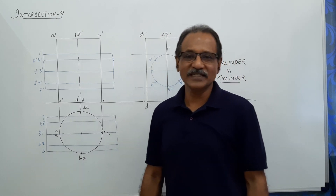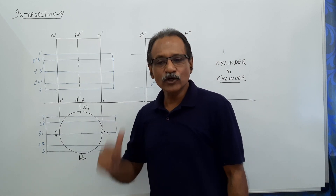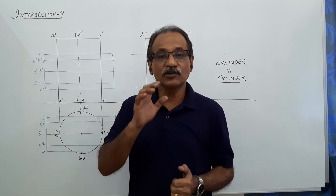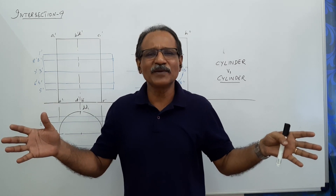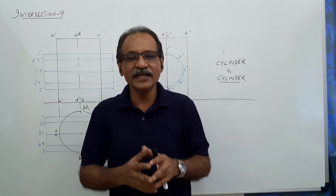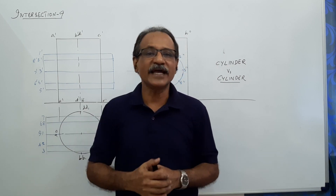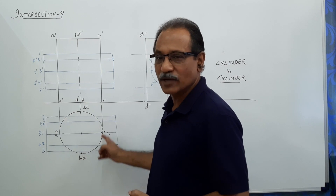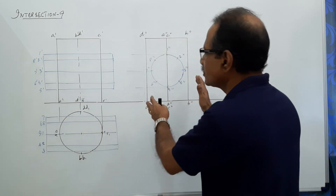Hi students, welcome to engineering graphics class. I am Dr. Vinod Kumar. We are going to do the intersection of a cylinder by another cylinder, which we see around us in so many places — for example, when pipes are connected. In this problem, we have a cylinder of 60 mm diameter, 100 mm tall, standing on its base on HP. This black is the plan of the cylinder, and this is its end view.